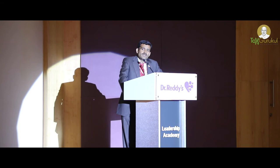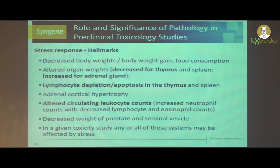When there is a substantial decrease in body weight as a result of test item administration, we can see downstream effects in other organs. With decreased food consumption, organ weight gets altered. Lymphoid organs like the thymus and spleen weight decrease, and adrenal weight increases due to overproduction of corticosteroid hormones and adrenal hypertrophy. Corticosteroids cause alterations in circulating leukocyte counts — you will see increased neutrophils and decreased lymphocytes and eosinophils.